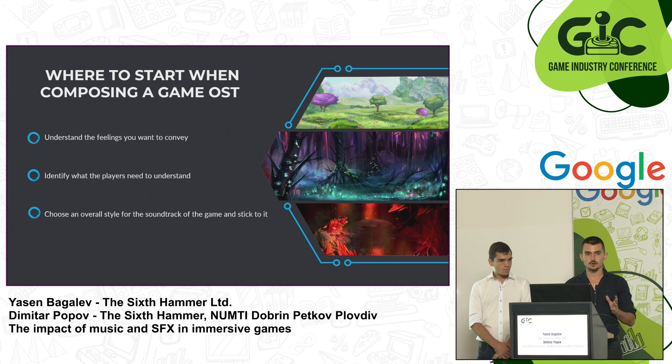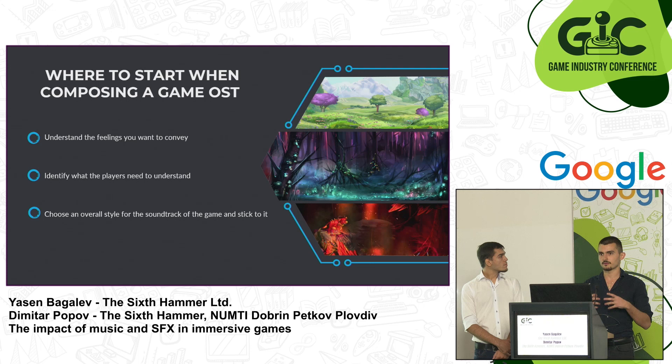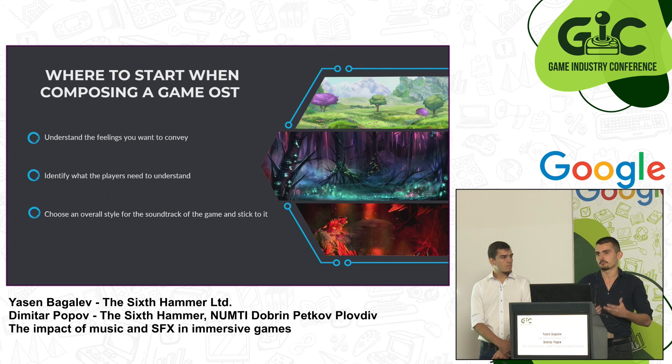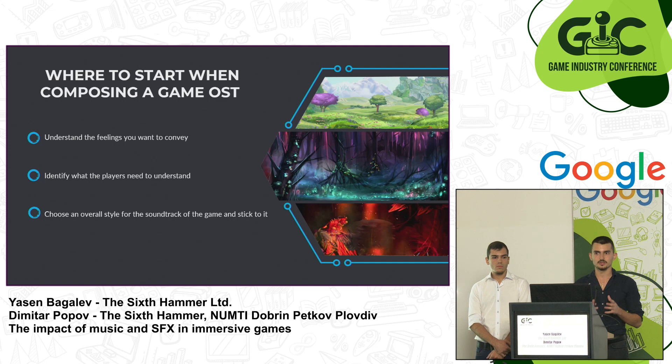Where to start when composing music for a game? First, for a particular scene you need to understand what feeling you want to convey. Do you want the players to feel fear or anxiety? Should they feel overpowered or adventurous? Then you need to identify: do you have any talking in the scene? Are there any special objects producing sounds? If there are, you need to leave those frequencies clear for the players so they can hear those things.